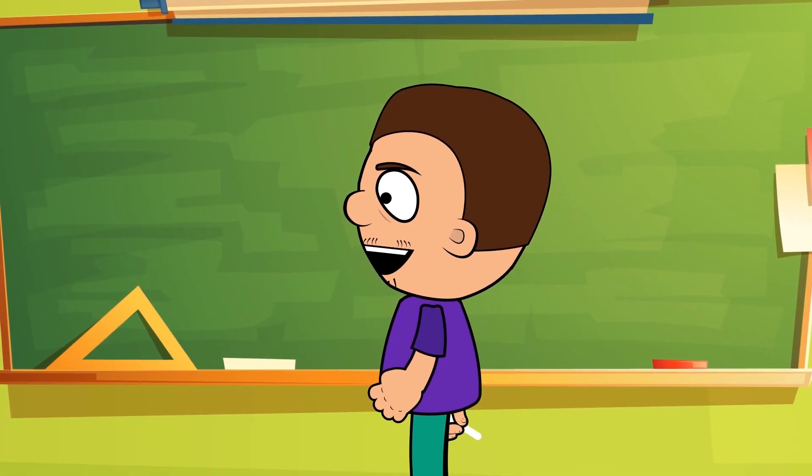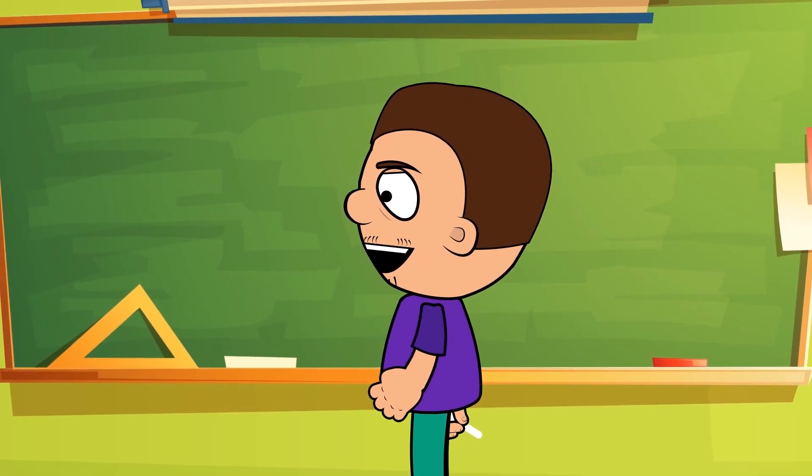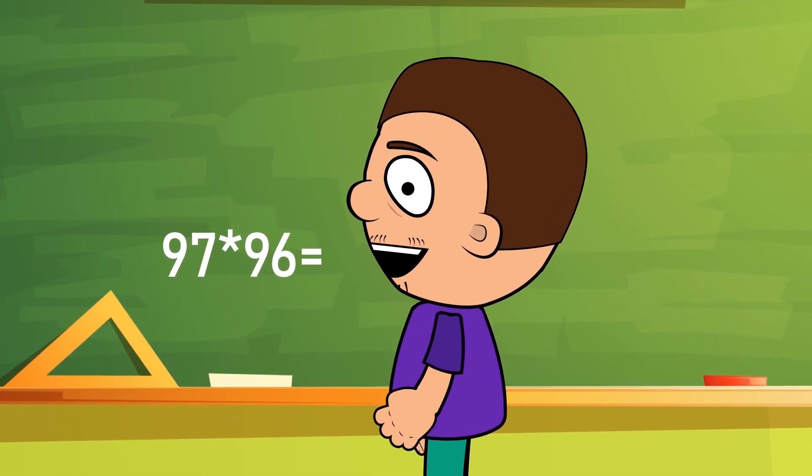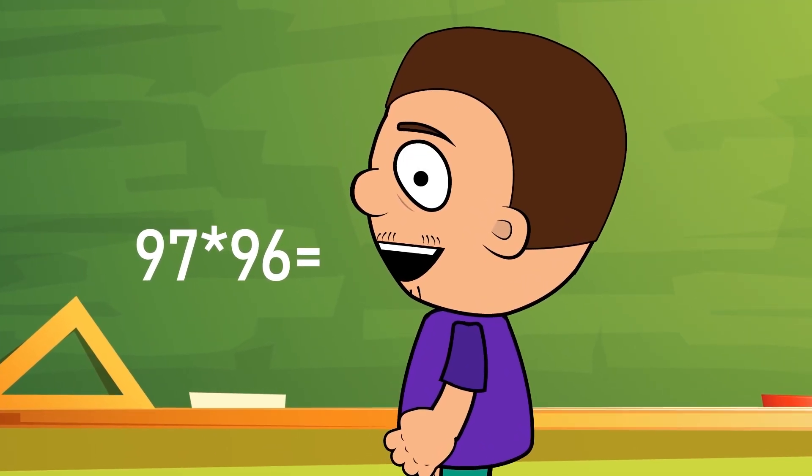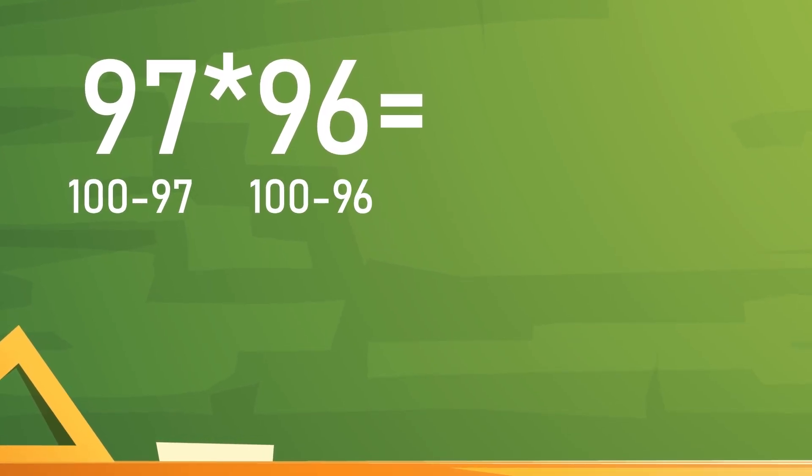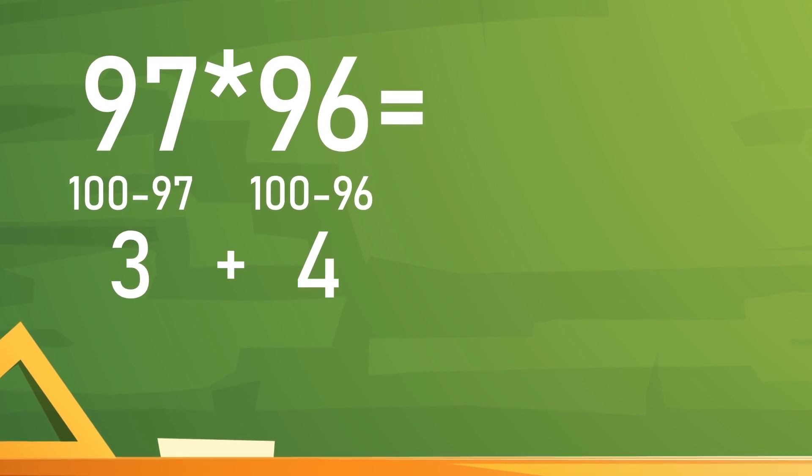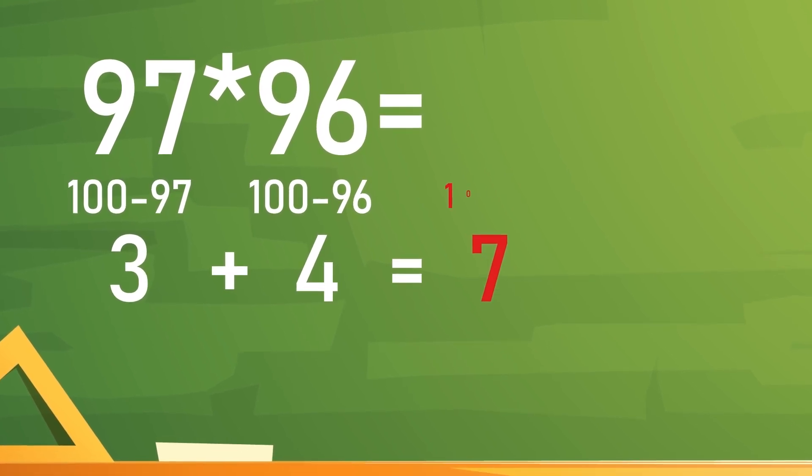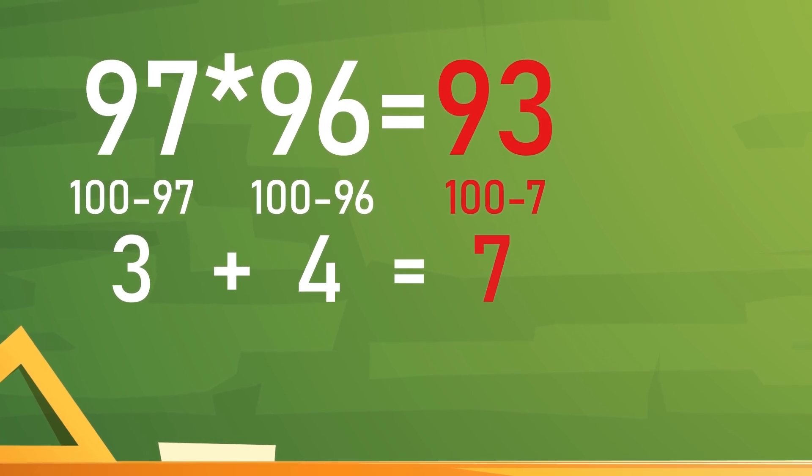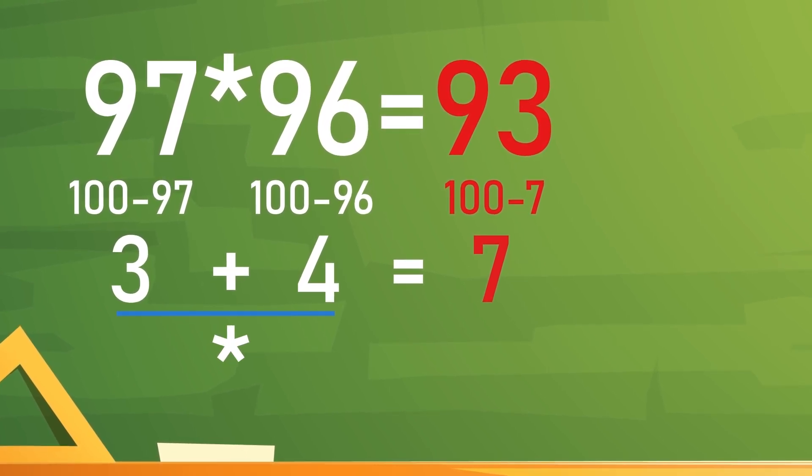Now let's try something harder. We need to multiply two two-digit numbers. For example, we need to multiply 97 by 96. So first, we subtract each number from 100. The results are 3 and 4 respectively. We add up these numbers and subtract the result from 100. We got 93 and that's the first part of our answer.